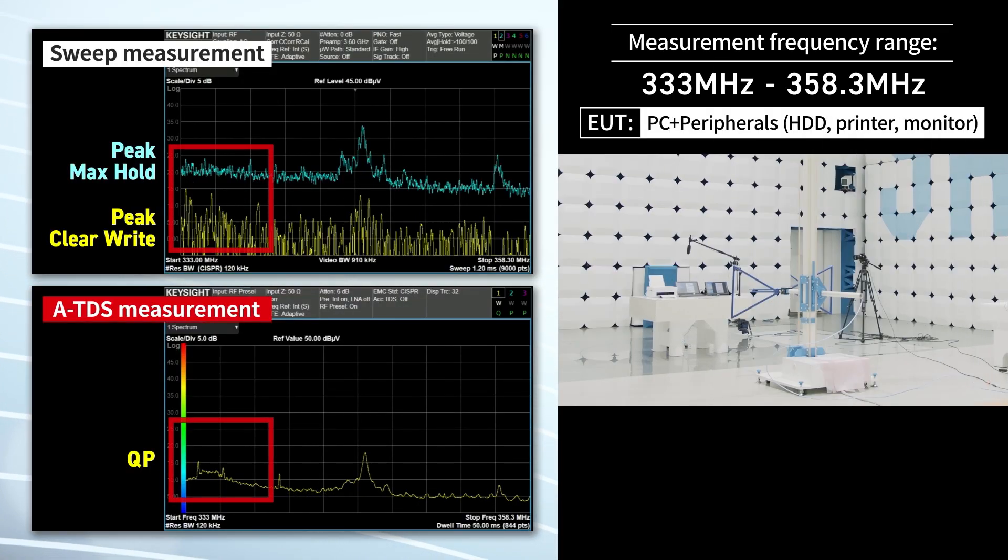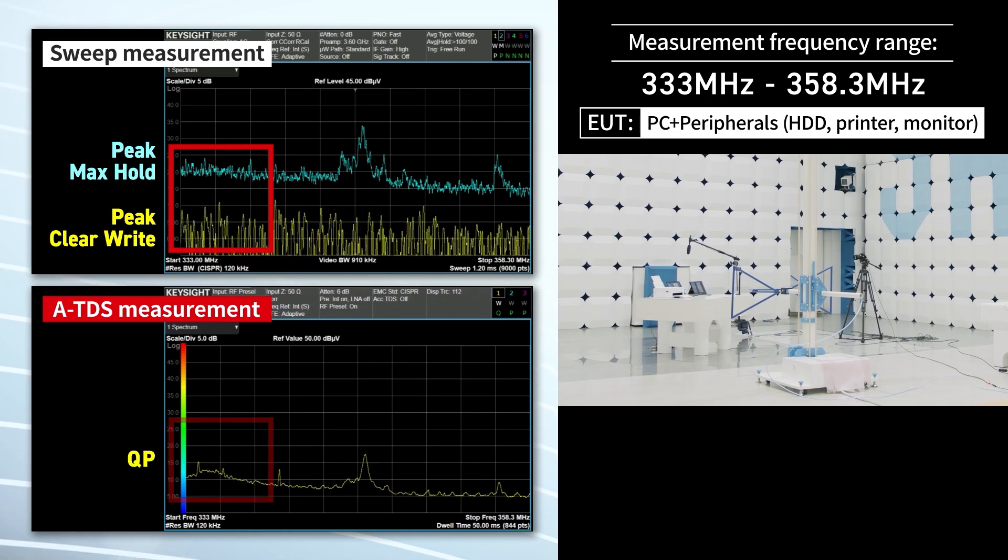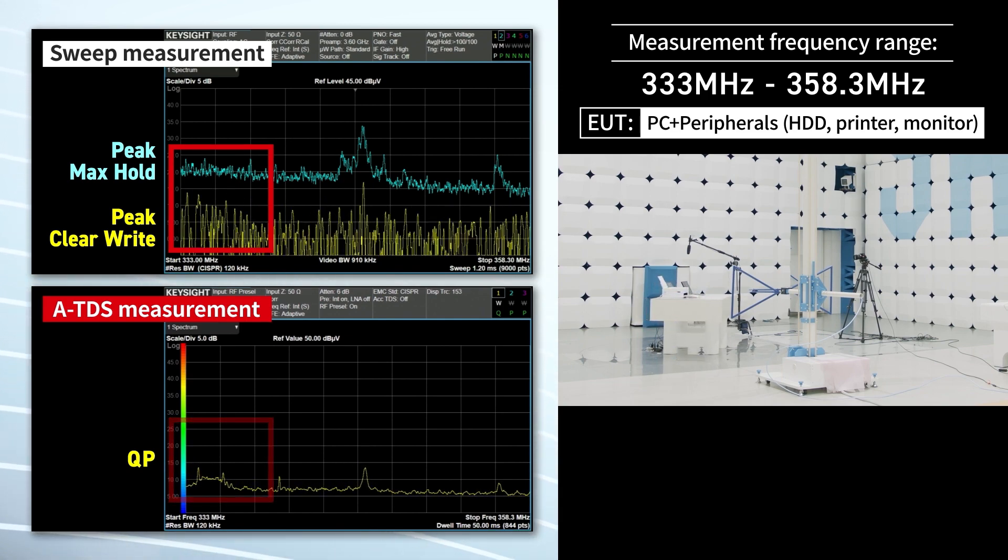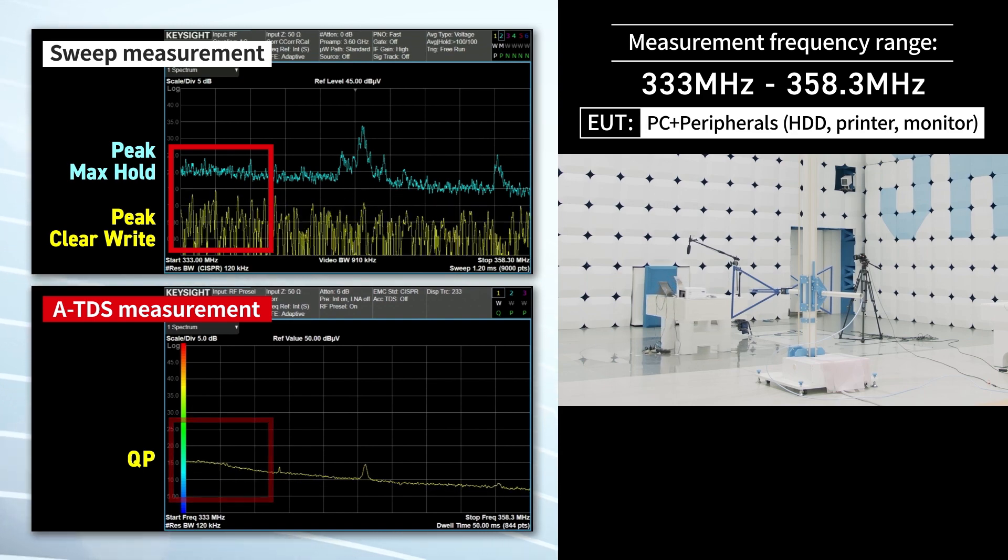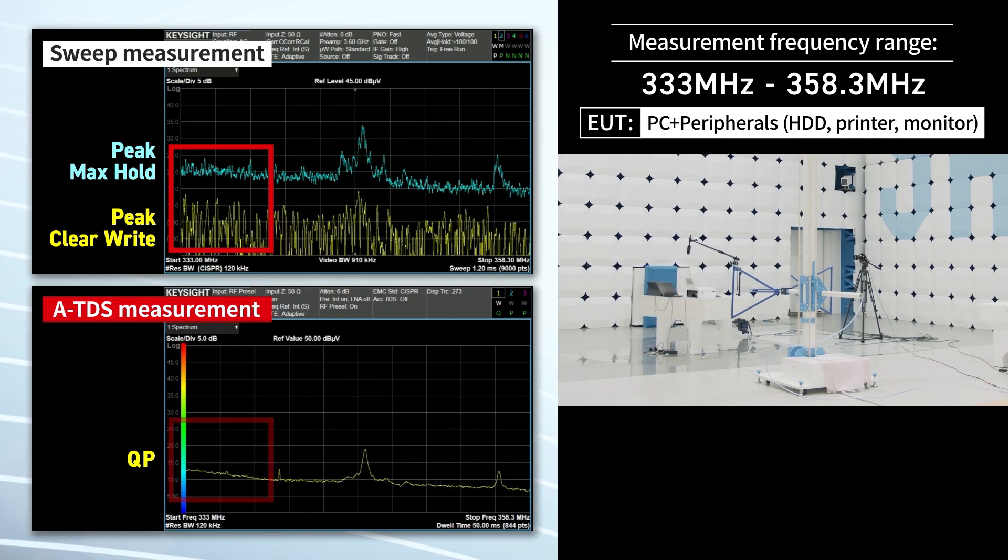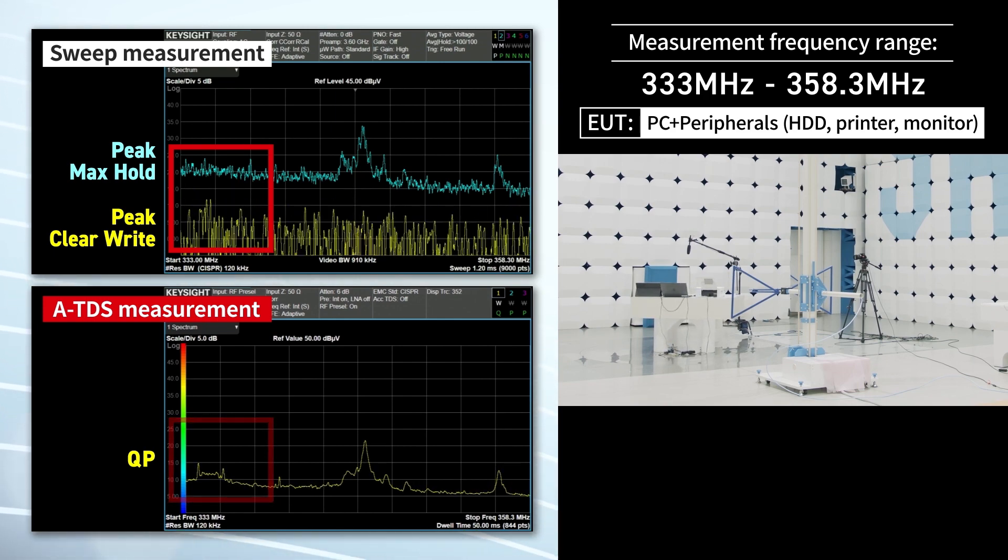Now, let's look at the noise behavior at another frequency range. During ATDS measurement, you can see spread spectrum-like noise on the left. It continuously varies with the rotation of the turntable. You can obtain accurate results even for situations like this.